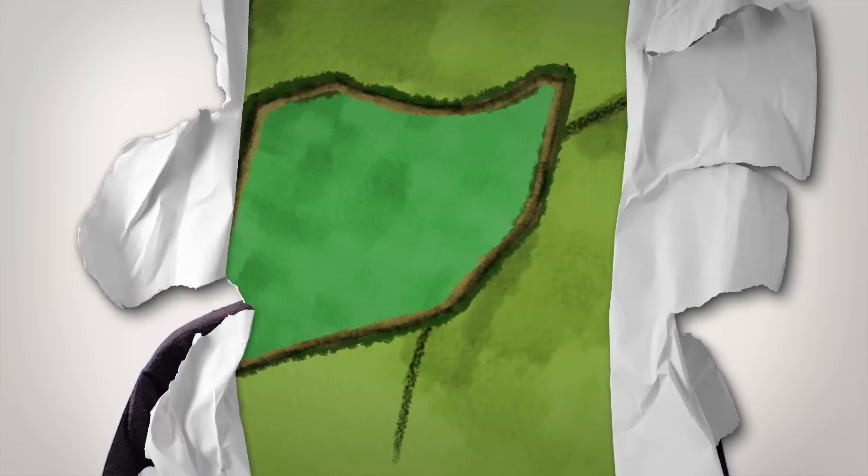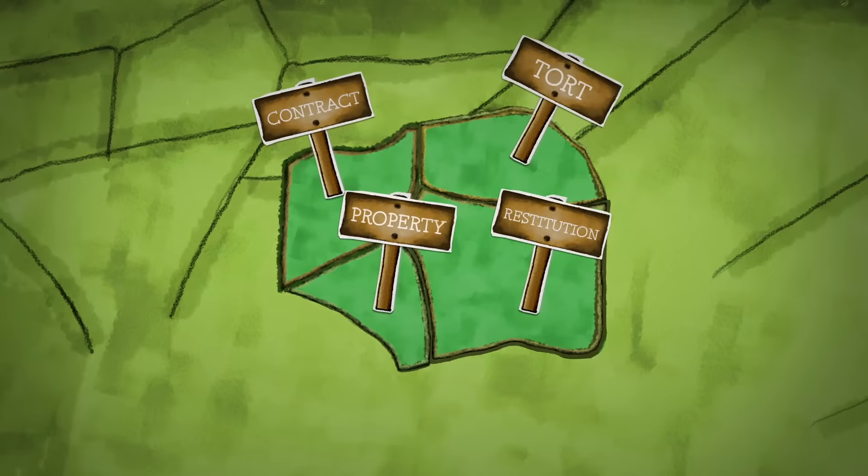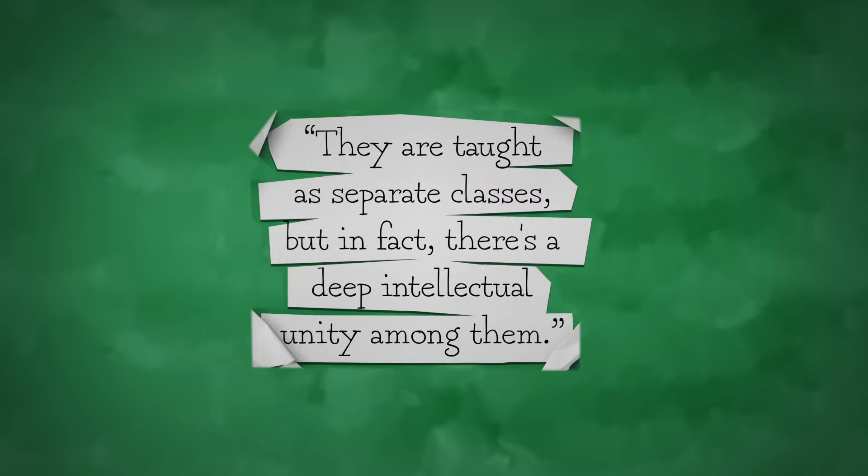What I'm going to do today is to try and reverse the process and show how it is that when you look at the four major branches of common law—property, contract, tort, and restitution—they fit together to form a much more coherent whole.